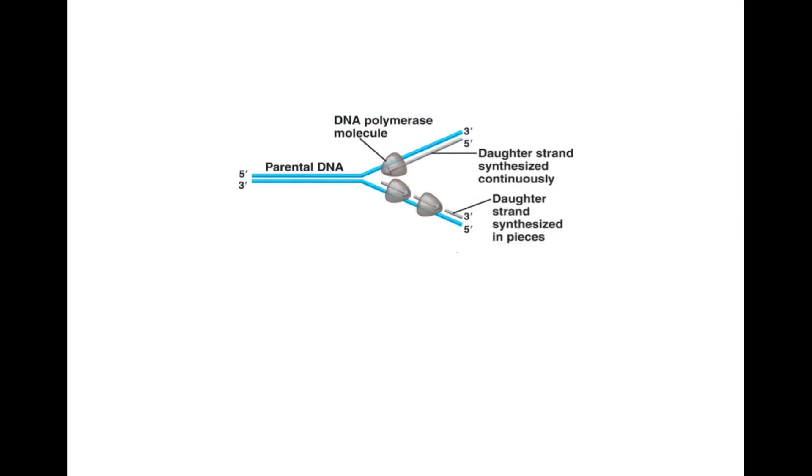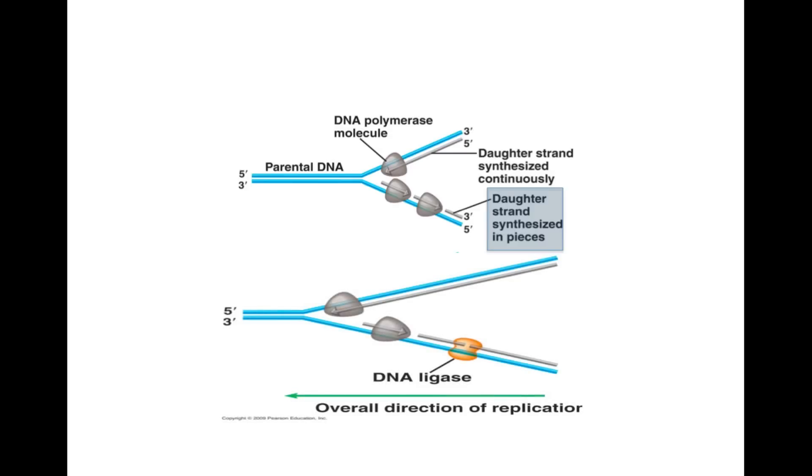Notice how the bottom parental strand creates DNA fragments. This happens because as the parental molecule unwinds, a new parental strand without base pairs needs another DNA polymerase to bind at the new 3' end. DNA ligase is responsible for attaching the DNA fragments.